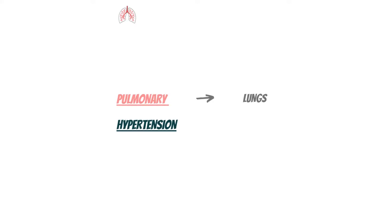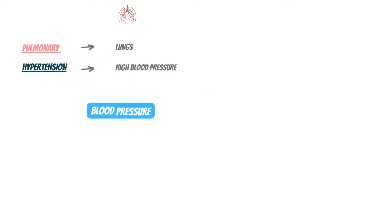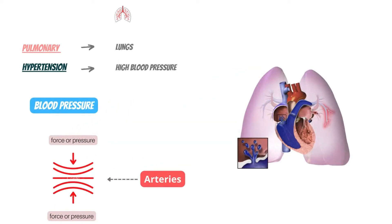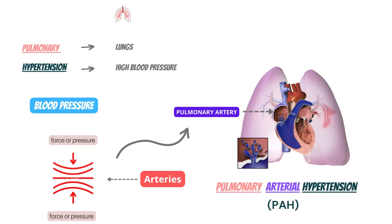Let's start by breaking down the term pulmonary hypertension. Pulmonary refers to the lungs, and hypertension means high blood pressure. Blood pressure, by definition, is the force exerted by the circulating blood on the walls of arteries in our body. So basically, pulmonary hypertension is the force or pressure exerted by blood on the wall of the pulmonary arteries, or arteries of the lungs. Since it's arterial blood pressure, it is also called pulmonary arterial hypertension, or PAH.